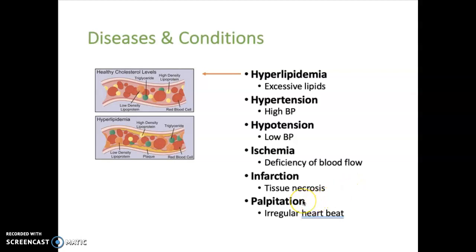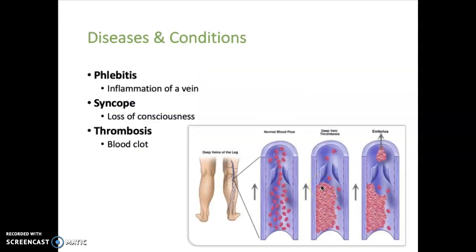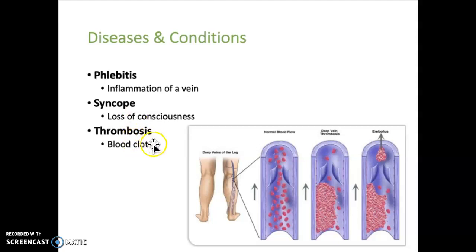Palpitation is an irregular heartbeat. Phlebitis — again with the "itis" ending — is inflammation of a vein. Syncope is partial or complete loss of consciousness due to decreased blood flow to the brain. And thrombosis is a blood clot.